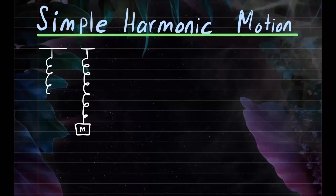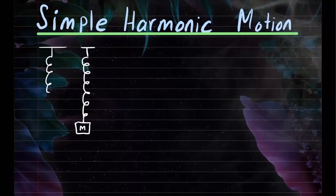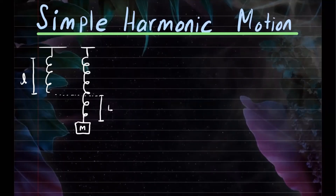Now let's take a look at modeling with second order differential equations. Here we have simple harmonic motion. For this experiment, you only need a spring and a mass. Suppose you have a spring of some natural length L — that's the natural length. After you attach the mass, it stretches some distance L. Our goal is to displace the mass from its equilibrium position, let it go, and the mass will oscillate up and down. The differential equations we model will help us determine the position of the mass at any given time T.